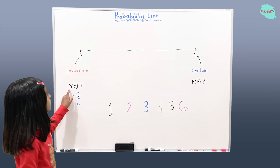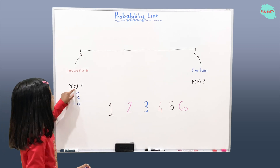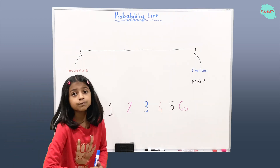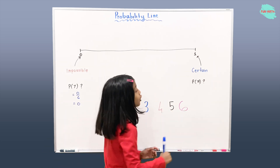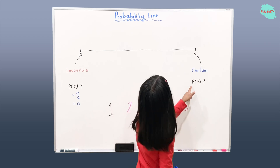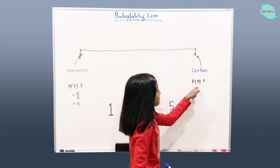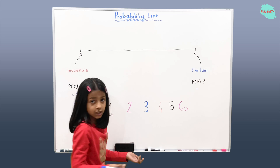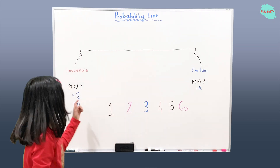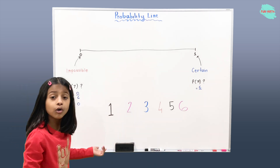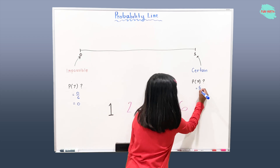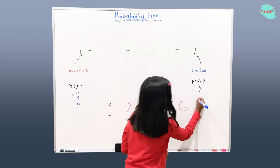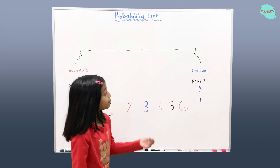So that means the probability of getting seven is zero — it is an impossible event. Now let's talk about a certain event. The probability of getting a natural number: there are six natural numbers here, so we write six on top. What goes on the bottom? We put the total numbers there, so six goes on the bottom. It becomes six over six.